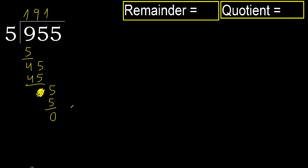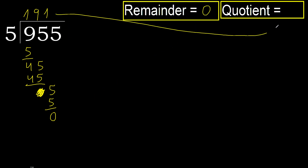That is not a number, therefore finish it. 955 divided by 5 is 191.